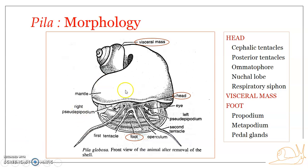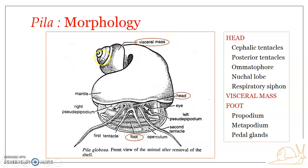The body can be divided into three regions: the head, the foot, and the visceral mass, otherwise known as the visceral hump. The head is the anterior part; the opposite side is the posterior. The ventral and dorsal sides are also distinguished. The foot is the ventral part, while the visceral mass forms the dorsal and posterior part.